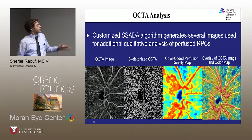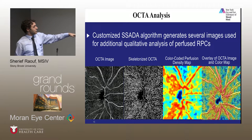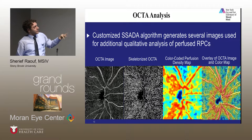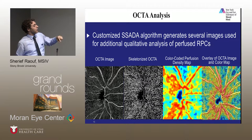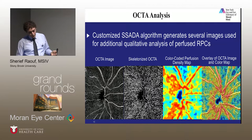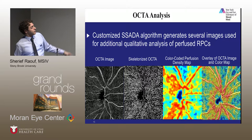A bit about image processing. On the left is the standard OCTA image. Next is a skeletonized OCTA, which assigns every vessel a uniform one-unit width regardless of its actual width. This allows better visualization of areas of dropout and prevents overestimating the effect of large vessels on the perfused vessel density calculation. The final two maps are color maps where each pixel is assigned a color based on local density: greater than 50% perfusion is red, zero is blue, and intermediate colors are assigned accordingly. The overlay of the two can be quite illuminating.